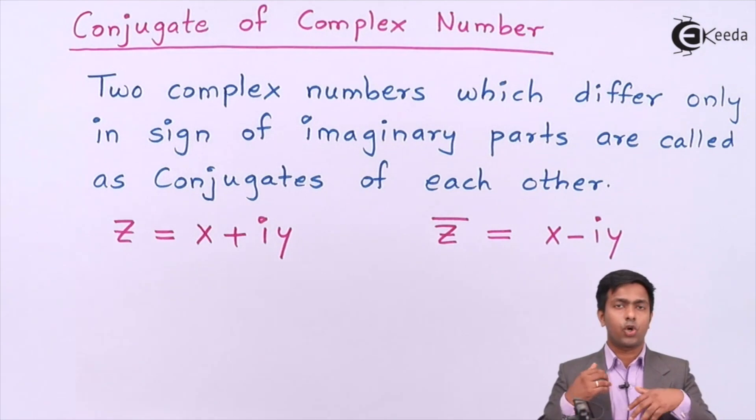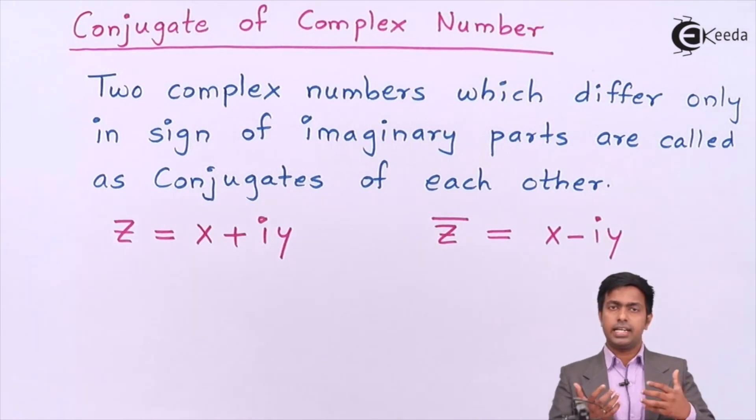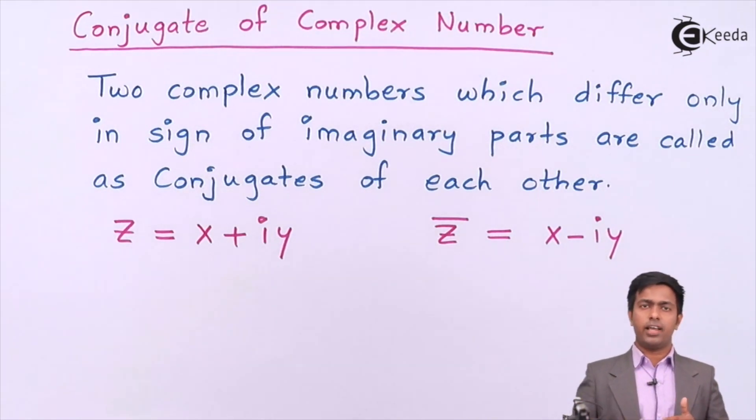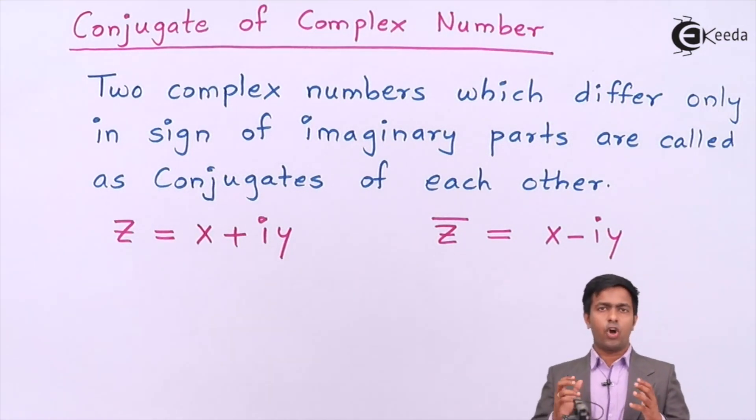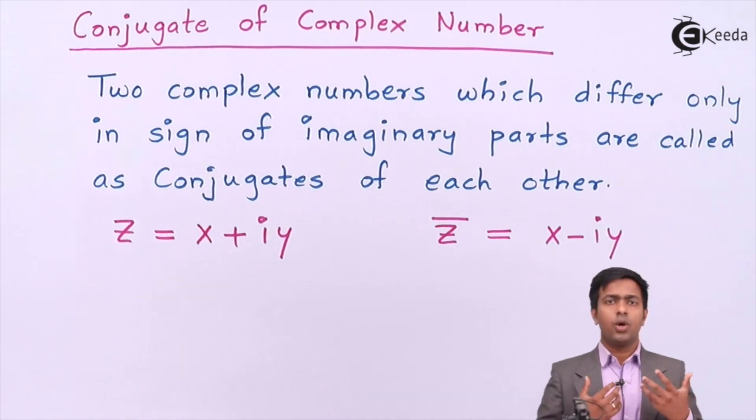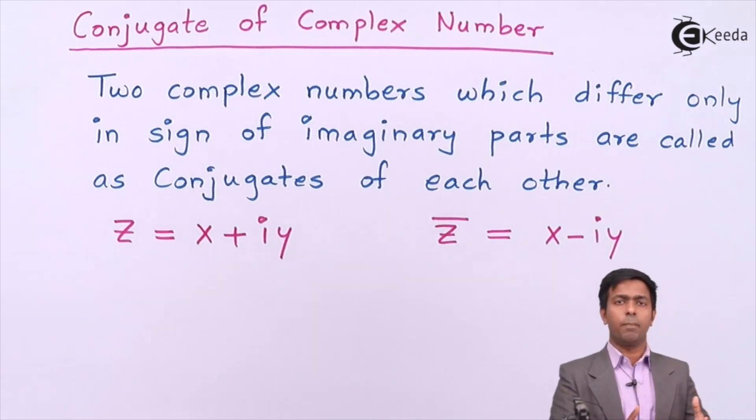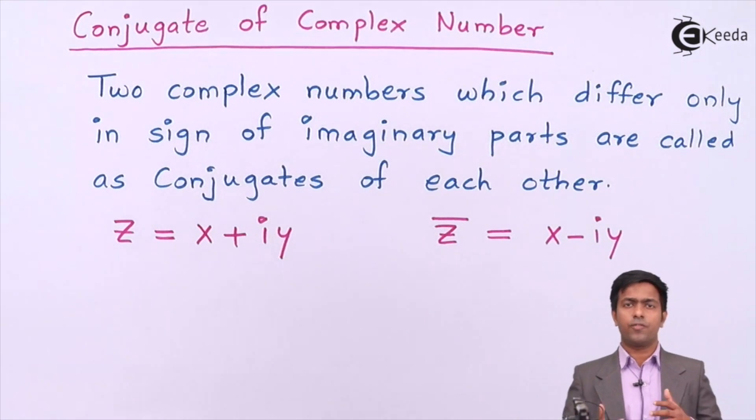This concept can be learned in other way also. Let's say the complex number is x - iy, then its conjugate is given by x + iy. In exact or in the numerals, whenever we give, let's say, a number as 3 + 2i, we can say the conjugate of 3 + 2i is 3 - 2i.